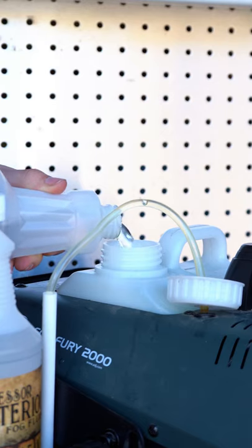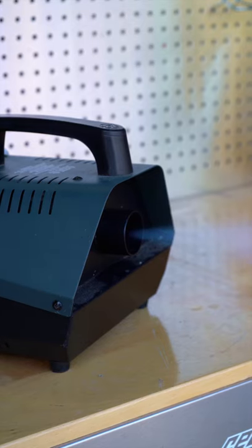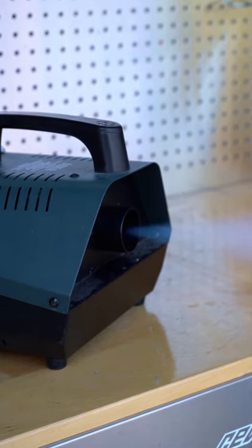Pour a small amount of fog fluid into your fog machine tank. Run the fog machine until you see the output is from your fog fluid.